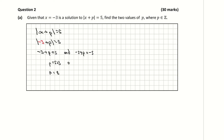And we also have p is equal to minus 5 plus 3 — sorry, that should be a plus 3 — minus 5 plus 3 is negative 2. So my two solutions, therefore, for p are p is equal to 8 and p is equal to negative 2.